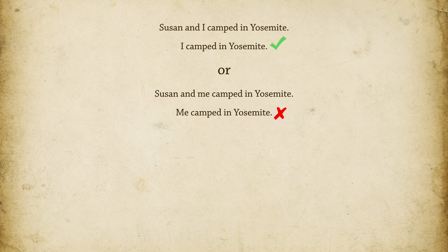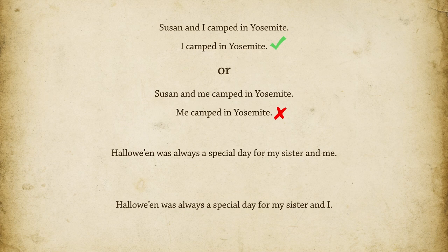Let's try another one. Which sounds right? 'Halloween was always a special day for my sister and me.' Or 'Halloween was always a special day for my sister and I.' Let's take out 'my sister' and see if that's easier.